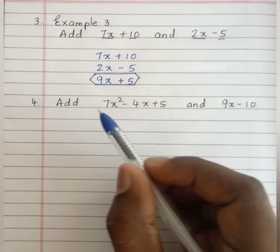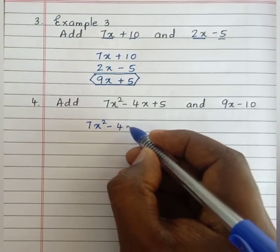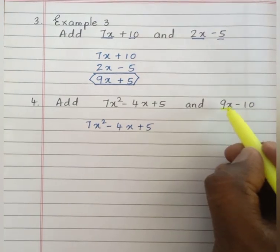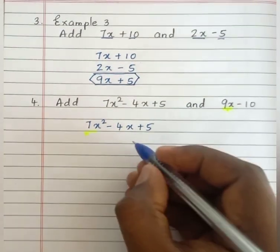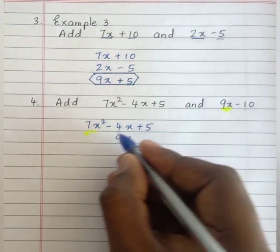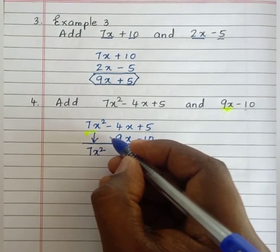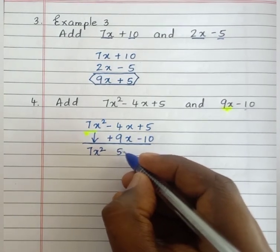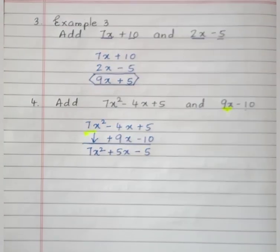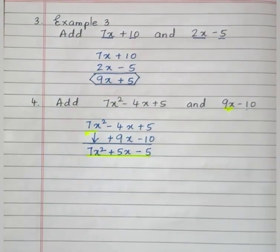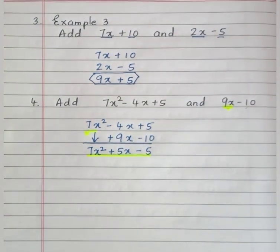Example 4: add 7x² minus 4x plus 5 and 9x minus 10. Write the first algebraic expression 7x² minus 4x plus 5. For the second expression, 9x should be written below the x term — not below 7x², as that would create unlike terms. So write below the term with the same variable and exponent. Then minus 4x plus 9x gives plus 5x, and plus 5 minus 10 gives minus 5. The answer is 7x² plus 5x minus 5.